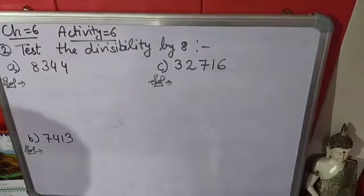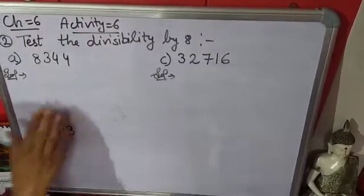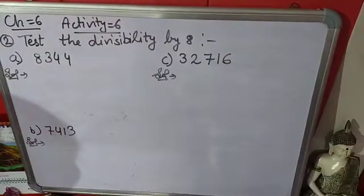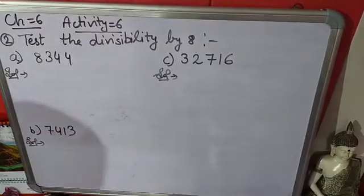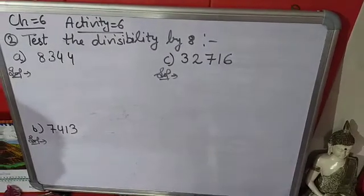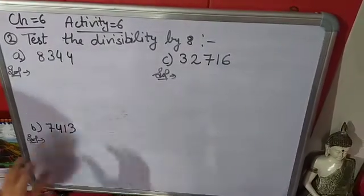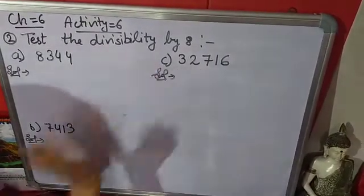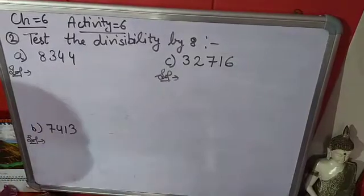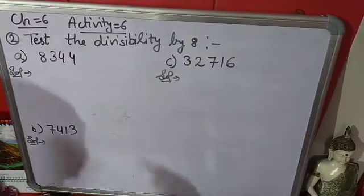You have to check if a number is divisible by 8 or not using divisibility rules. The divisibility rule of 8 is that the last 3 digits should be divisible by 8.